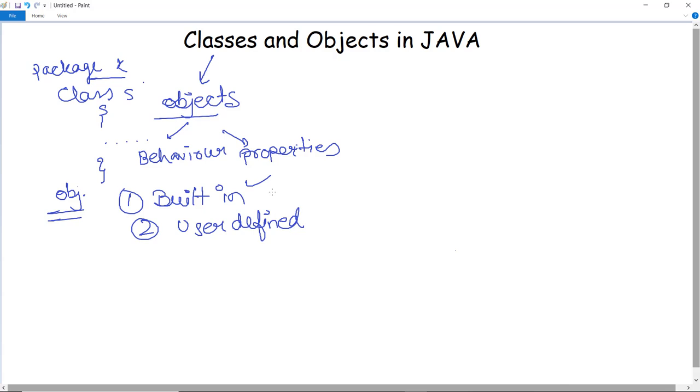exception, object, date, hash map, array list. All such classes are known as built-in classes.